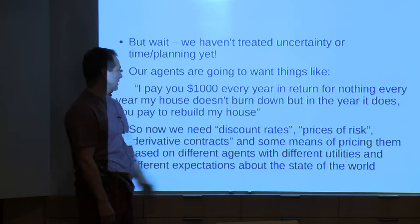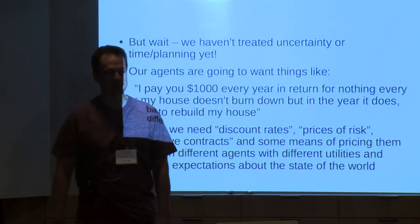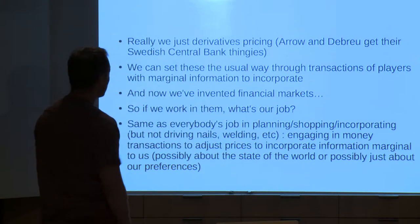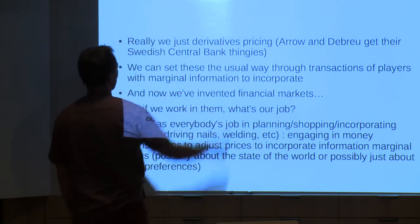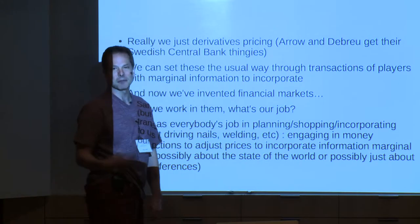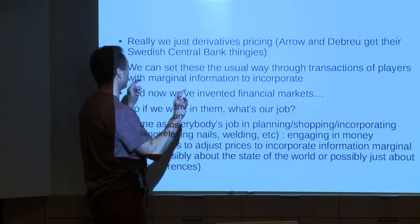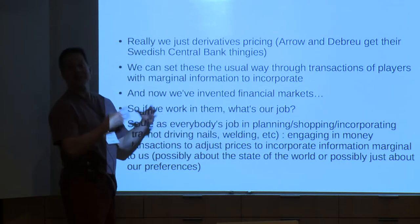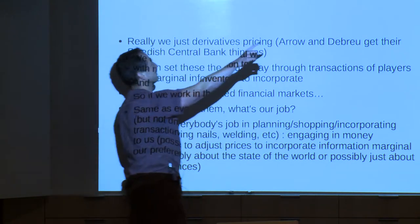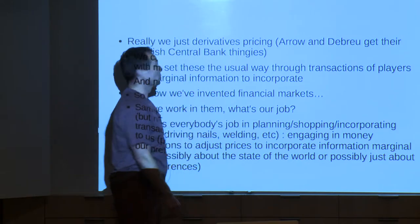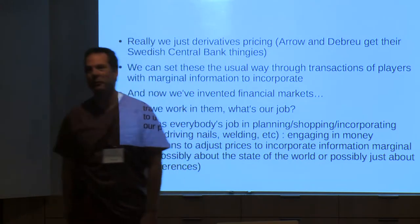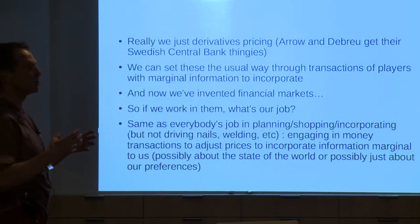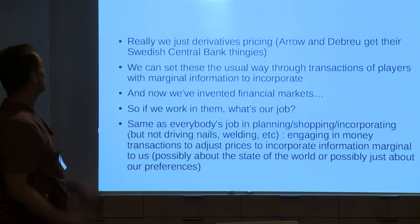We need prices of risk, and we need to know what money forward is worth versus money now — discount rates. More generally, we need derivative contracts, and some means of pricing these derivative contracts for all these different agents in a complicated world. Derivatives pricing is general enough to cover all of the insurance, prices of risk, and discount rates. Arrow and Debreu got their prize from the Swedish National Bank for pointing out you could think of almost everything in the context of derivatives pricing and possible forward states of the world.